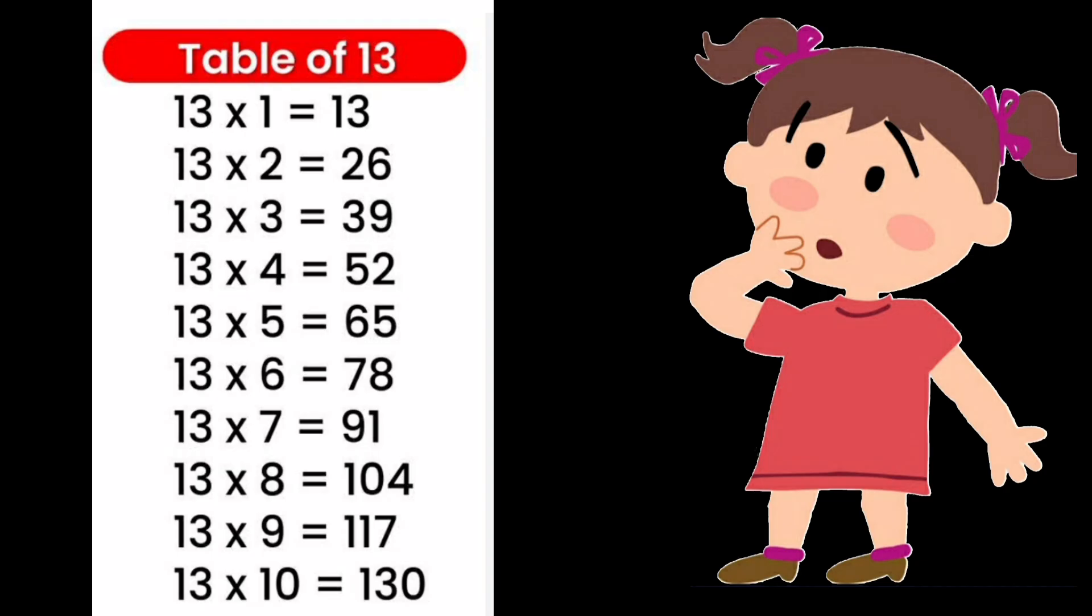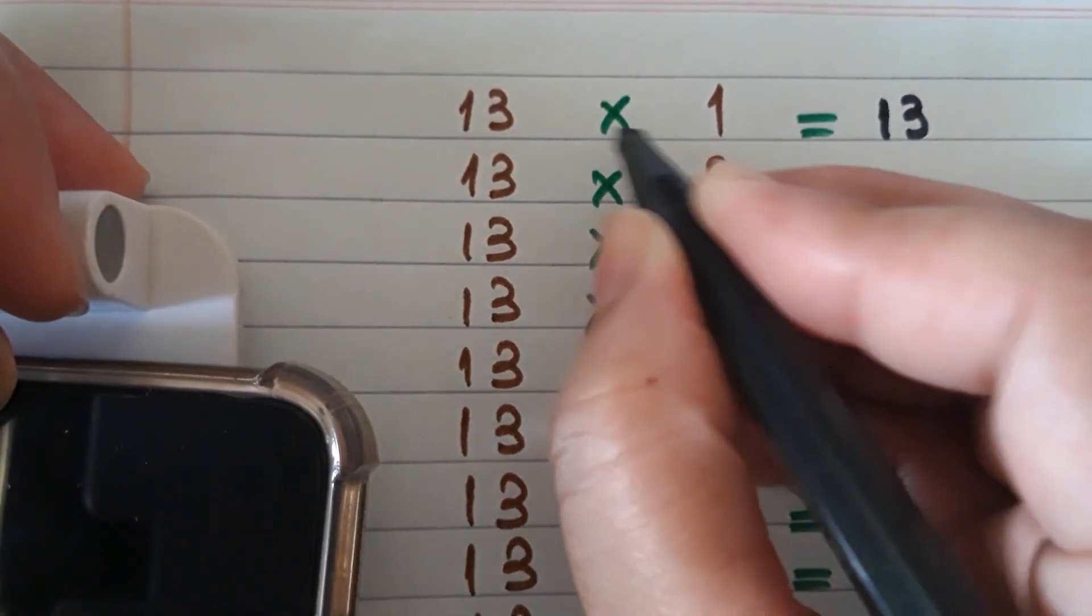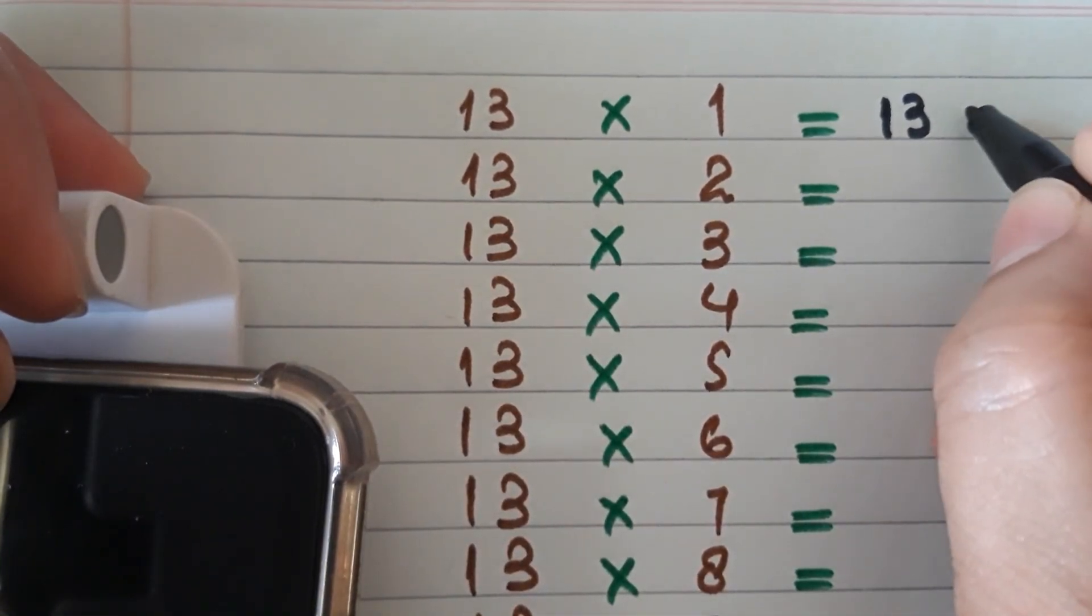The easiest way to learn the table of 13 is by adding 13 to the previous number. As you can see in this video, when we add 13 with the previous number, we will get the next number answer.